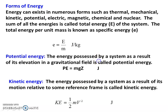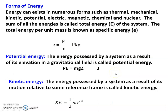In thermodynamics, we review potential energy and kinetic energy — these definitions are at school level, just a review. Potential energy is the energy possessed by a system as a result of its elevation in the gravitational field. Potential energy equals M times g times Z, where M is the mass of the system, g is the acceleration due to gravity (9.81), and Z is the height from the datum level.